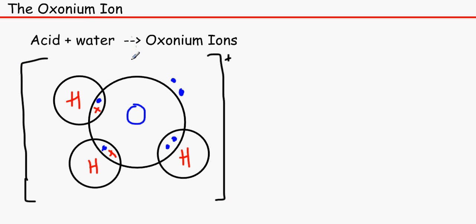So this oxonium ion, it's just basically an acid and water being mixed together to make an oxonium ion. And this is usually in many different types of reactions. So what happens is that this is a lone pair. This is a normal covalent. This is a normal covalent. And this is dative.